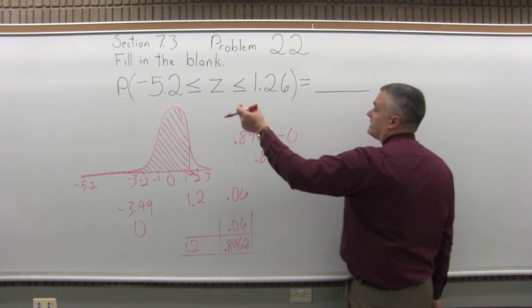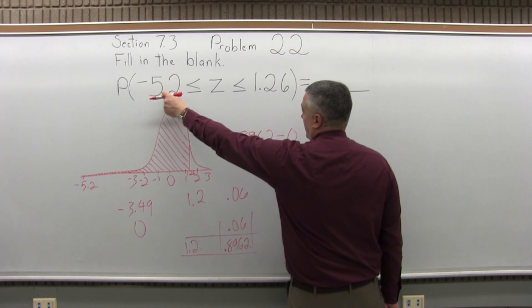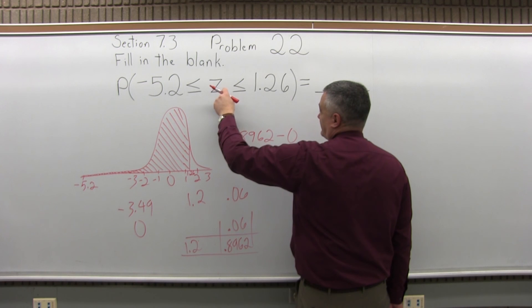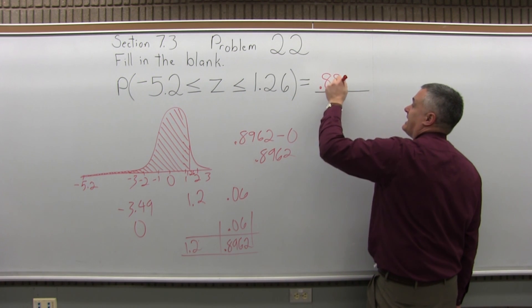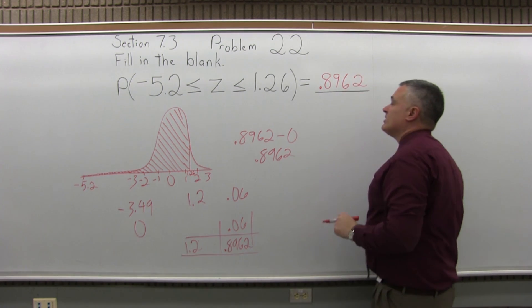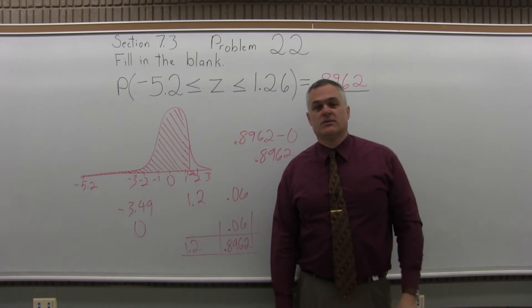So the probability that negative 5.2 is less than or equal to z is less than or equal to positive 1.26 is a probability of 0.8962, or very close to a 90% probability.